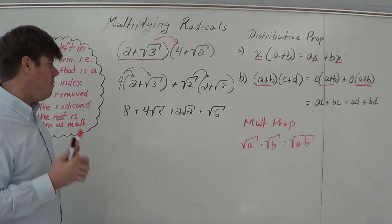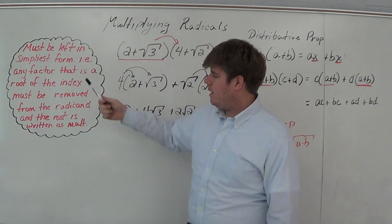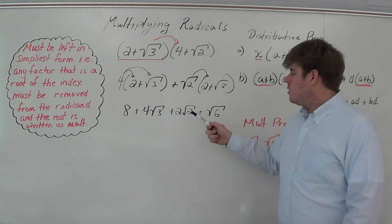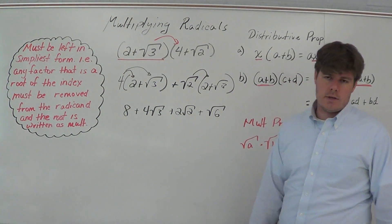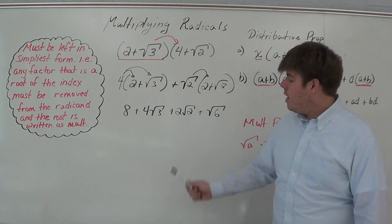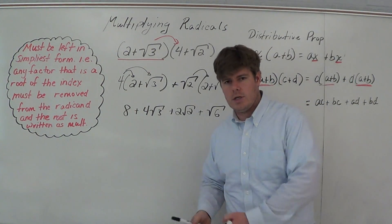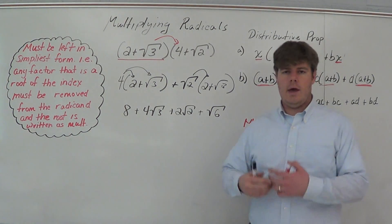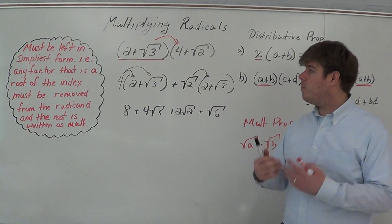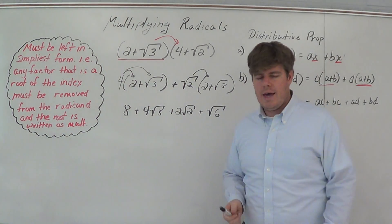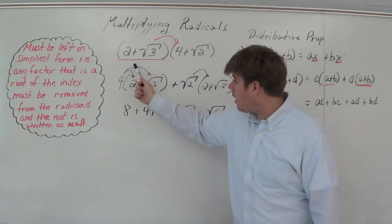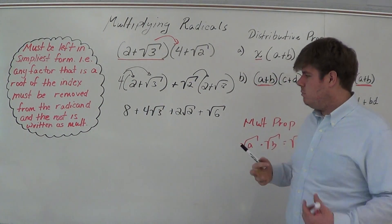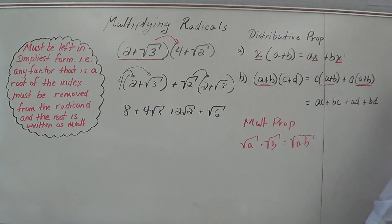Now I come back and look at all of these and remember that it must be left in simplest form — any factor that is a root of the index must be removed from the radicand. There is no square number that divides into three, two, or six, so all of these roots are in their simplest form. None of these roots can be combined because to combine a root through addition, you have to have the same root. So this is my final answer. It applied the multiplication property and the distributive property method.